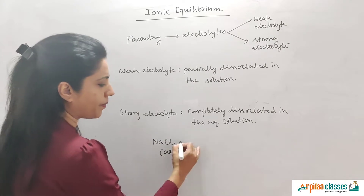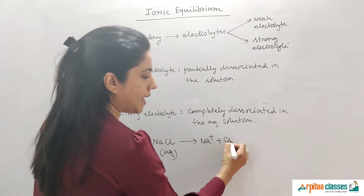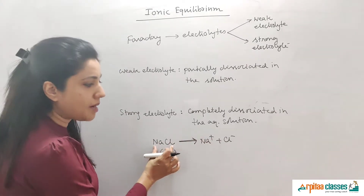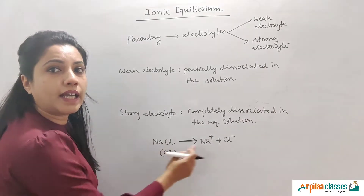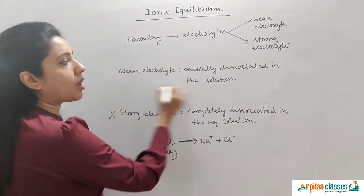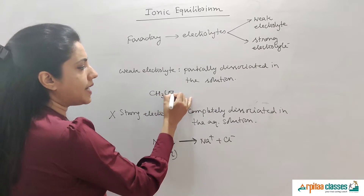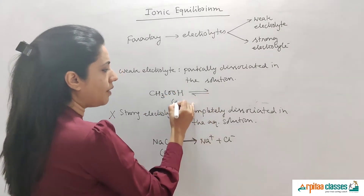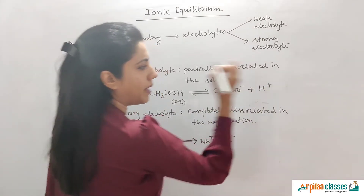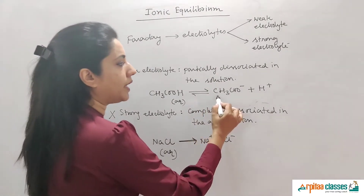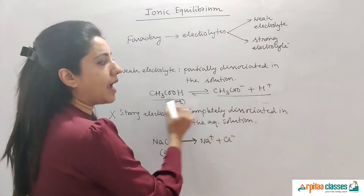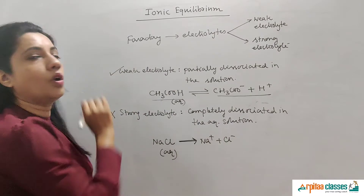For example, NaCl dissociates into Na⁺ and Cl⁻ with a unidirectional arrow toward the forward direction, so all NaCl molecules dissociate into ions — no equilibrium is established. We are going to talk only about weak electrolytes, like CH3COOH. When dissolved in water, it dissociates into CH3COO⁻ and H⁺. At any point in time we get both ions and molecules, so there is an equilibrium set up between them.